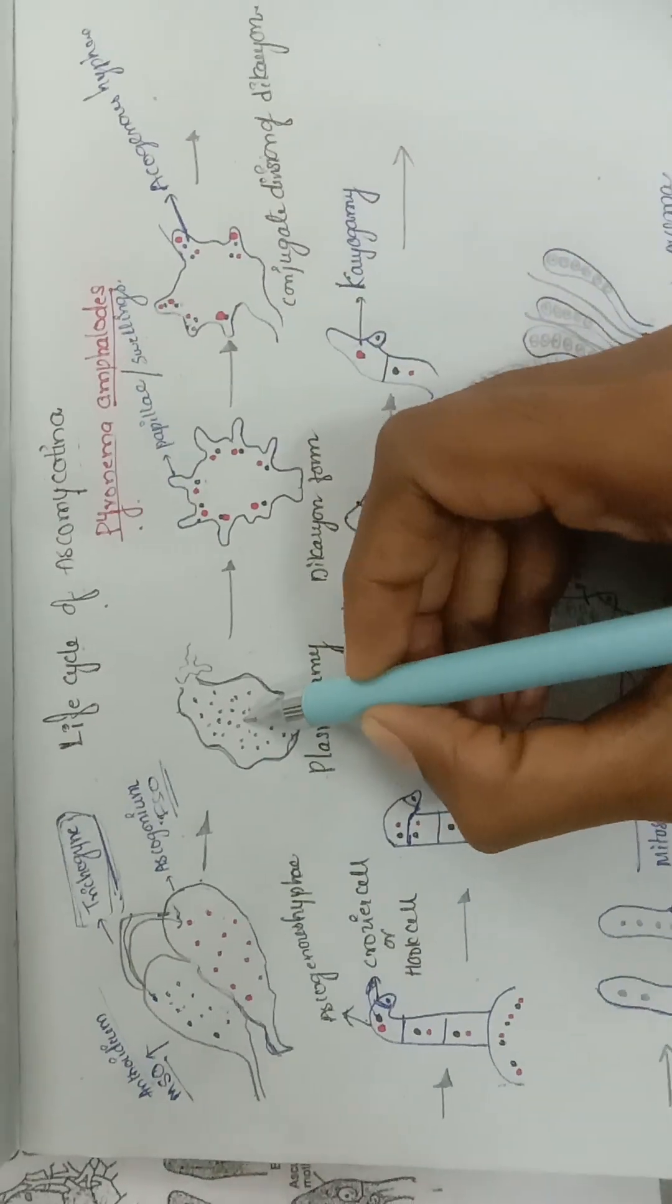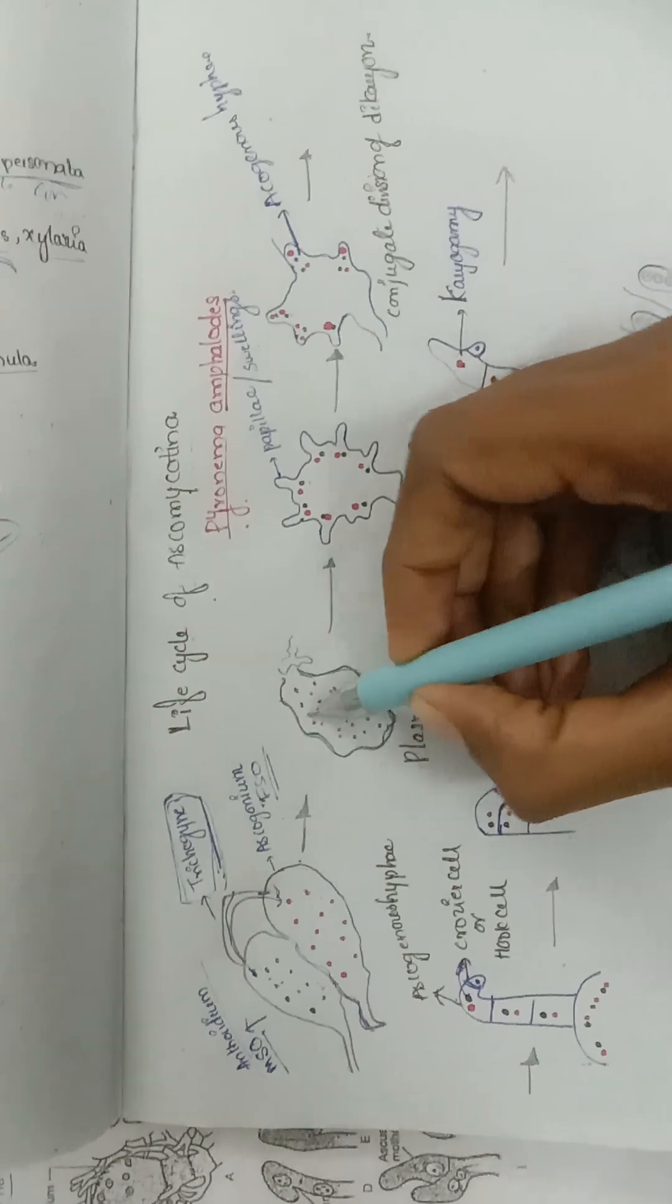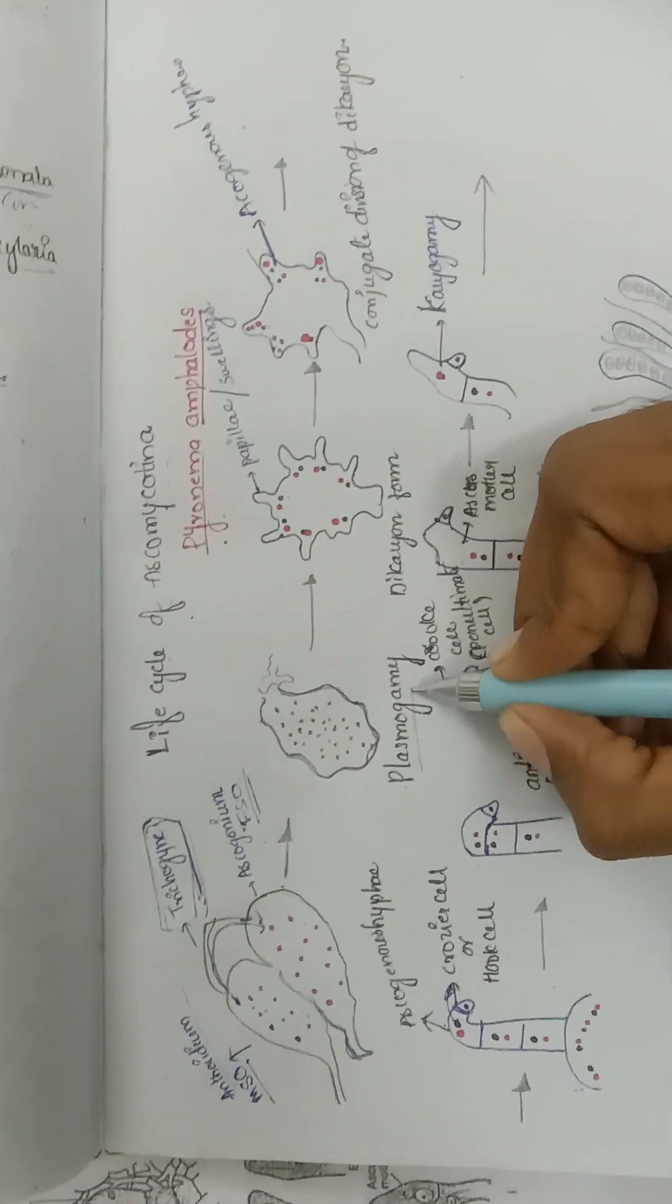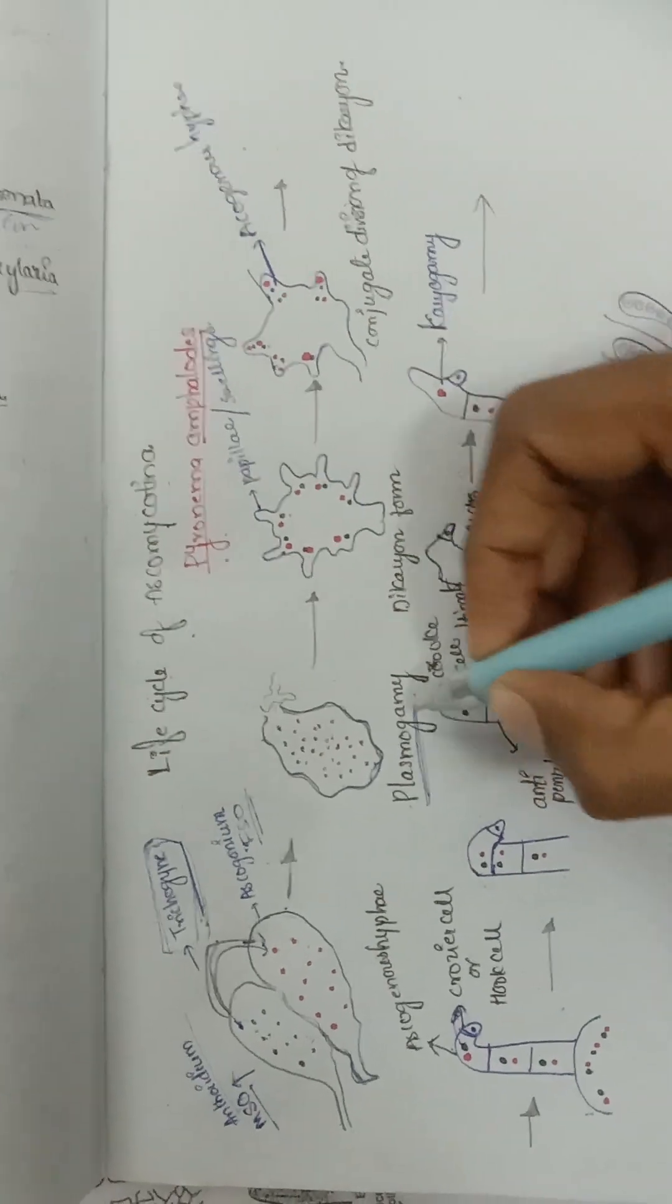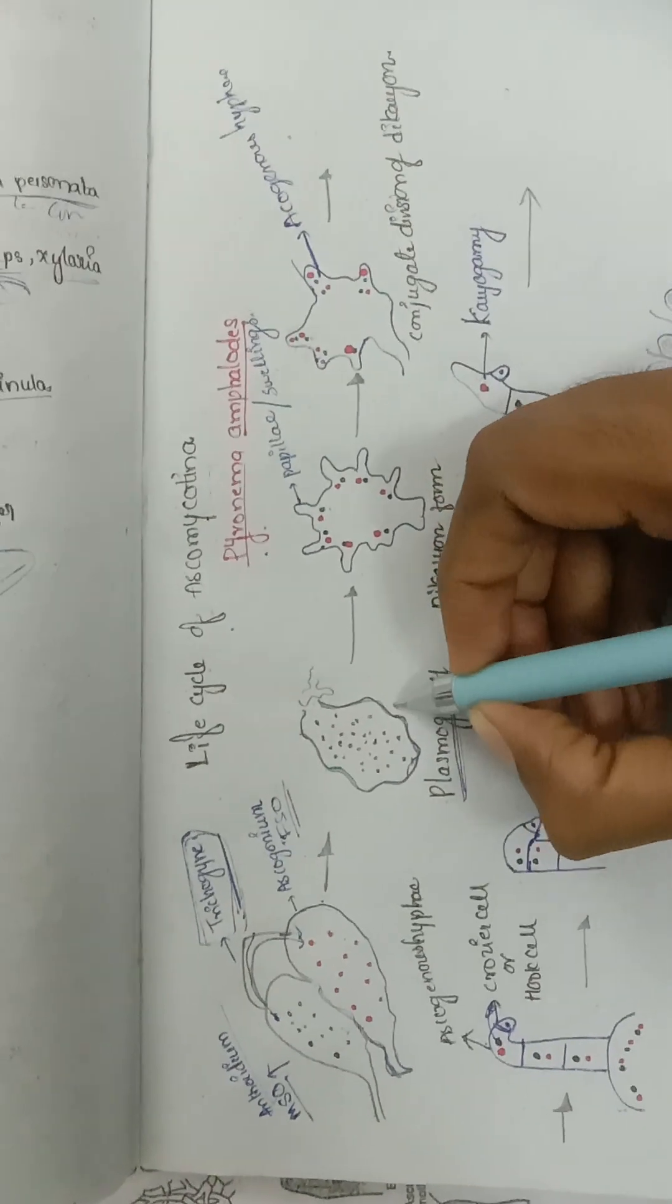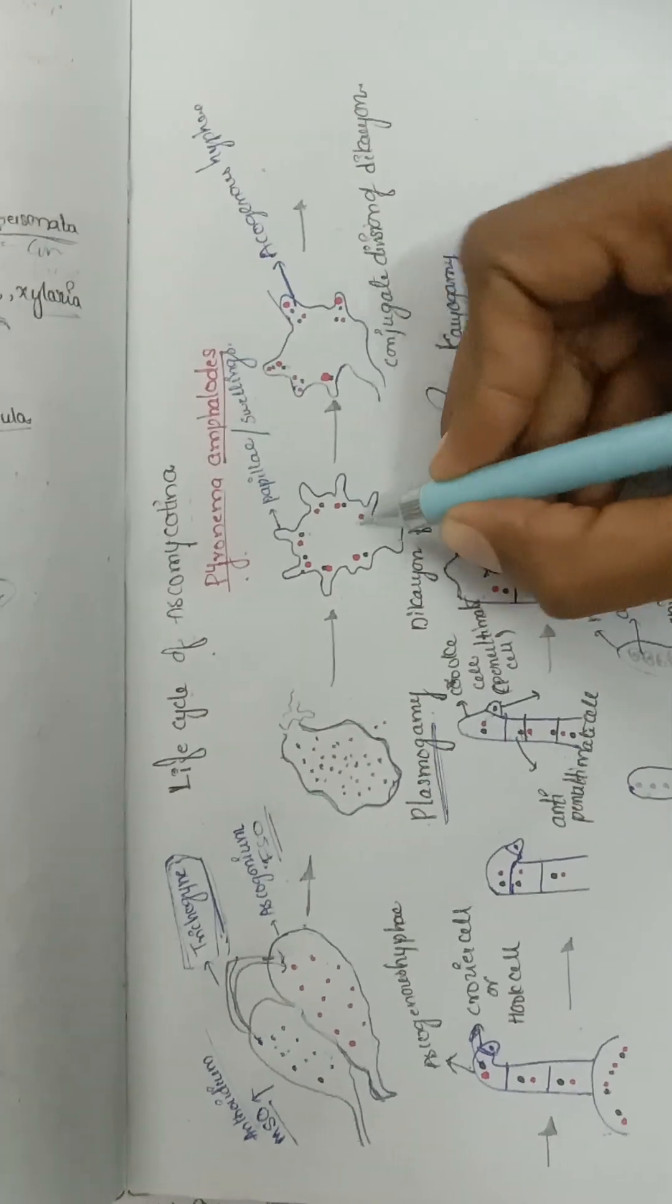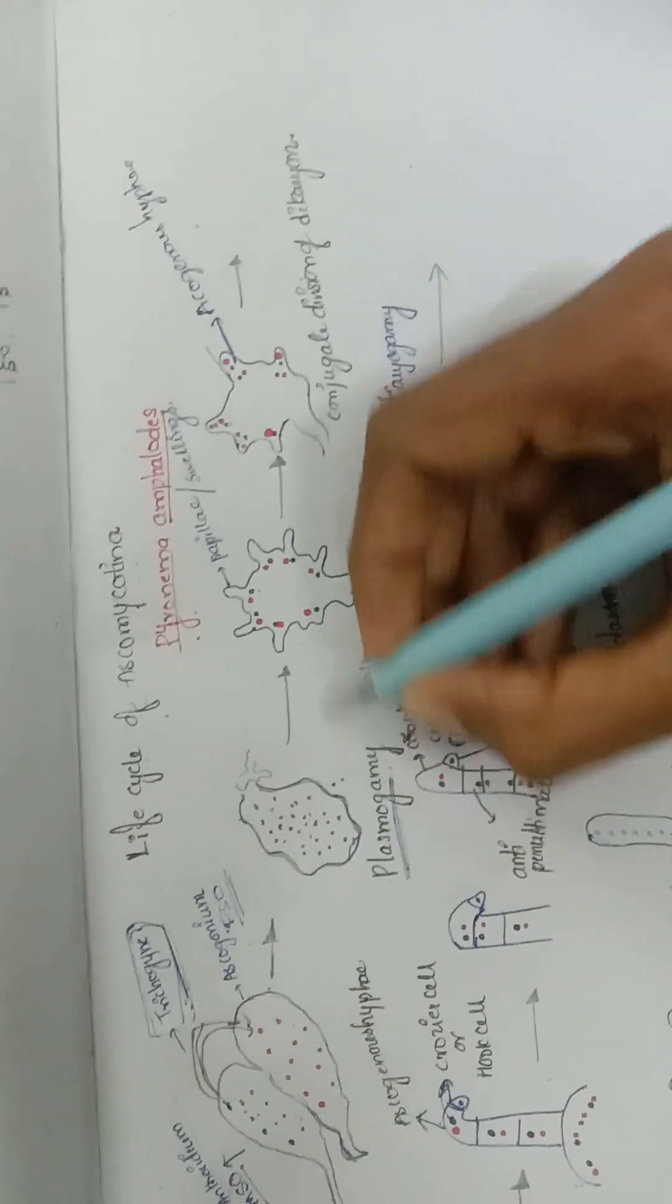Here, plasmogamy takes place, but karyogamy does not take place here. Plasmogamy means fusion of cytoplasm or protoplasm.